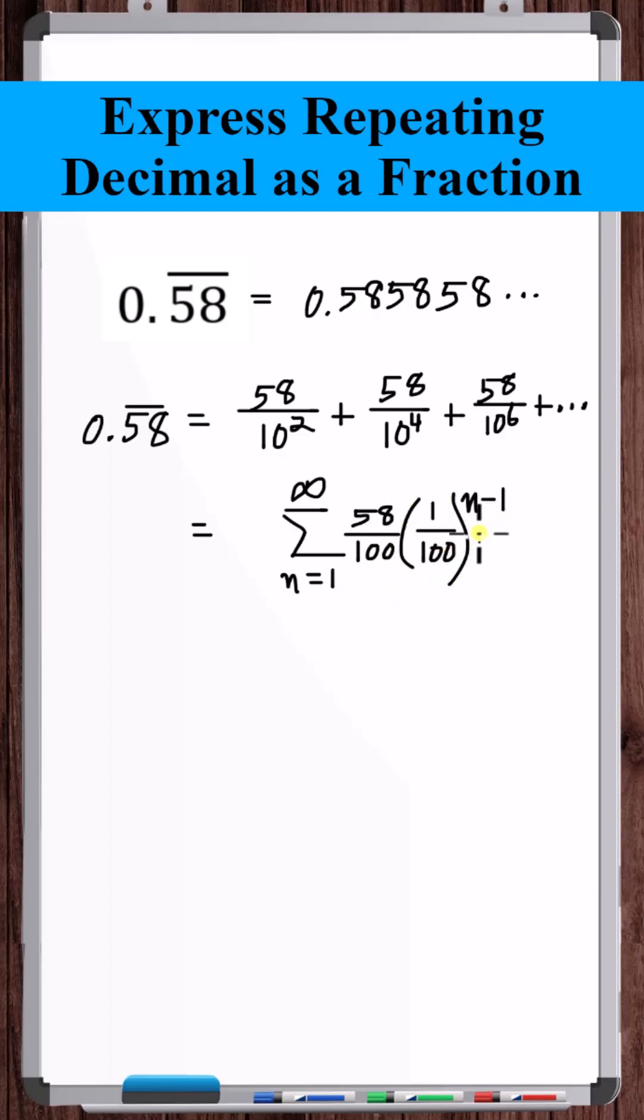Since the absolute value of the common ratio is less than 1, we know that this infinite geometric series converges. It converges to the first term over 1 minus the common ratio.